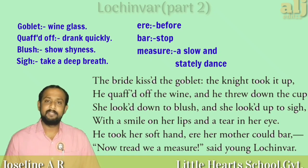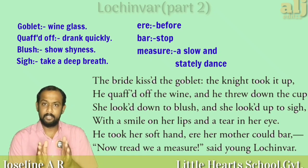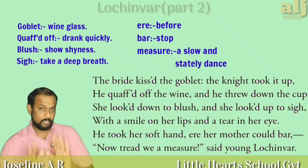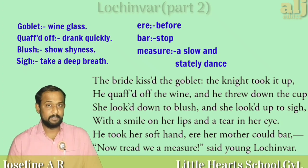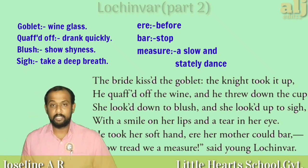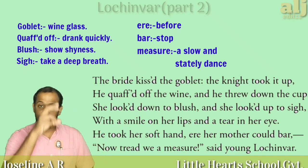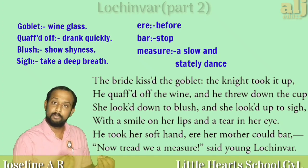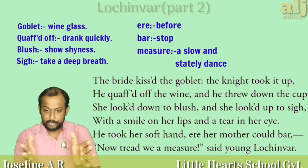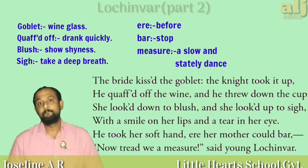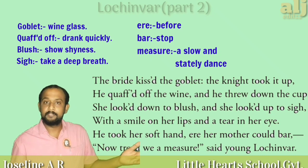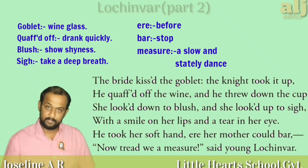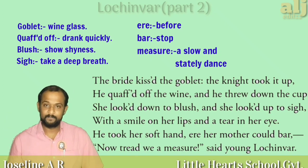He took her soft hand. 'Ere' — an archaic, old English word meaning 'before' — before her mother could bar, meaning stop. She was standing with her mother. He went straight towards her, first drank the wine from the glass which she had kissed, and immediately took her soft hand. He said 'Now tread we a measure' — measure means a stately dance, a dance of a couple. He took her authoritatively and said shall we dance. He did not even properly invite her; he just took her soft hand and started dancing with her, before Ellen's mother could stop.